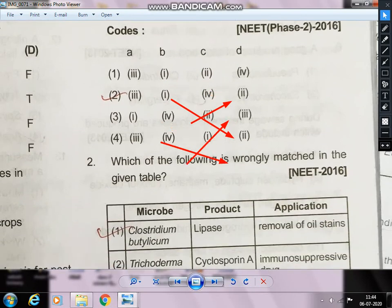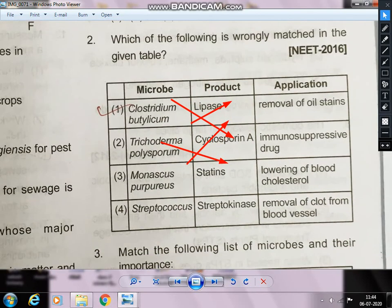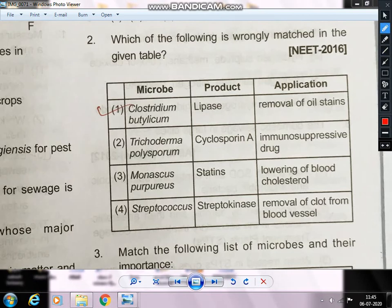NEET 2016 question — which of the following is wrongly matched? Clostridium butylicum makes butyric acid — but it is matched with removal of oil stains (lipids), so that is wrong. Trichoderma polysporum produces cyclosporine, an immunosuppressive drug — correct. Monascus purpureus produces statin for lowering blood cholesterol — correct. Streptococcus produces streptokinase for removal of blood clots — correct. So Clostridium butylicum/removal of oil stain is wrongly matched.